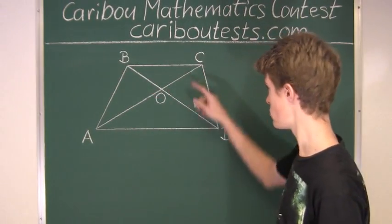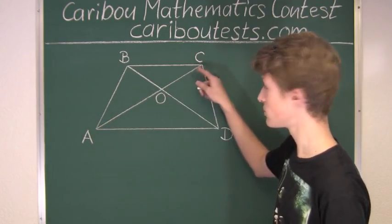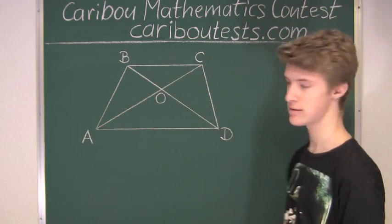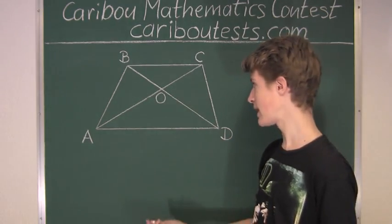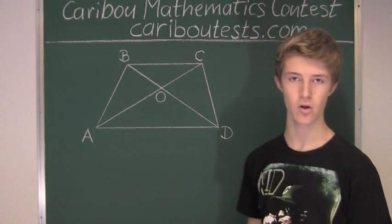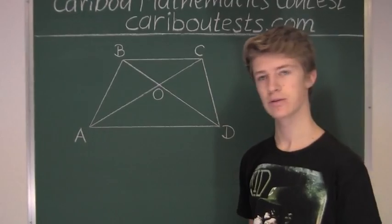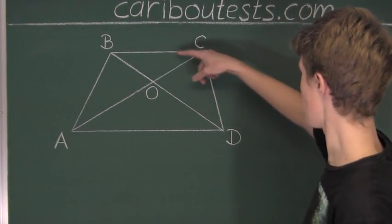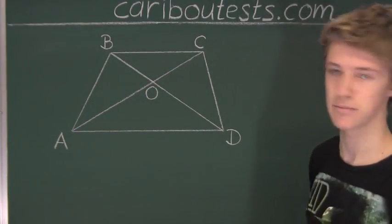But what also stands out is these two diagonal straight lines, which intersect these two parallel lines. And any time that happens, we are given some angle relationships. So to make it easier, we will just extend this parallel line and also the intersecting line.